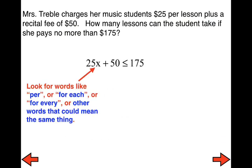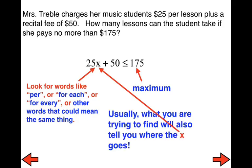Things we're looking for: important words like 'per,' 'for each,' 'for every,' or similar words that tell us where the variable goes. Our total or maximum usually goes on the right-hand side of our inequality. Remember all of those things we learned when we did two-step equation word problems.